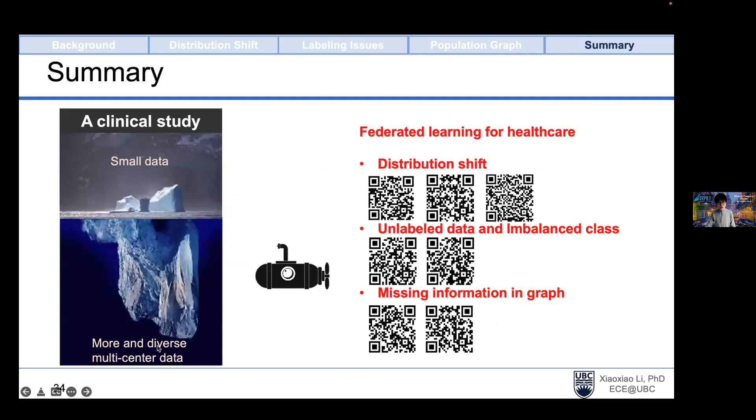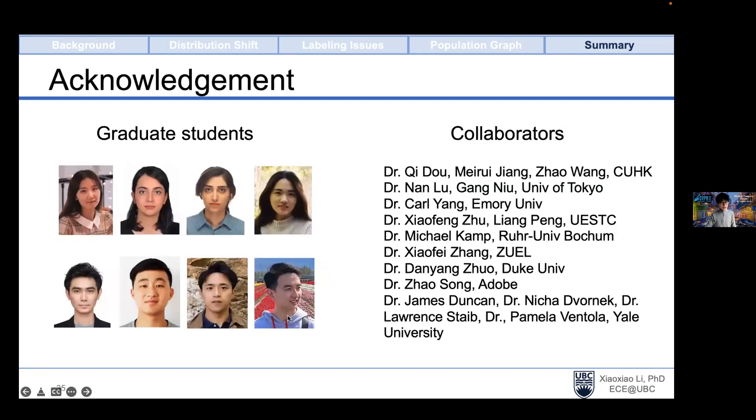In summary, to improve AI model's generalizability and accuracy, we aim to use more and diverse multi-center data under privacy regulations and try to avoid sharing medical data. To this end, we investigate how federated learning can be applied in multi-center medical data analysis. There are a few challenges including distribution shift, unlabeled data, imbalanced class, and missing information when we deal with population graph medical data. To tackle these challenges from different perspectives, we propose several methods, and I show the QR codes linked to the work I presented today under each of the topics.